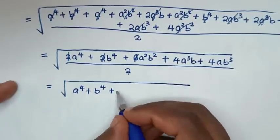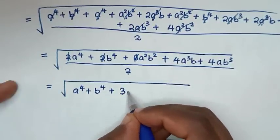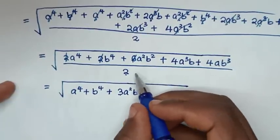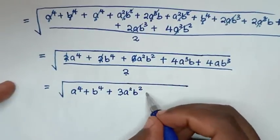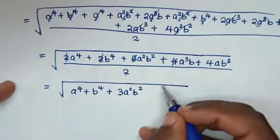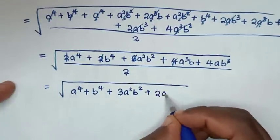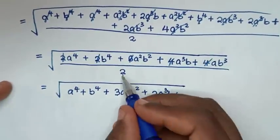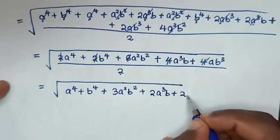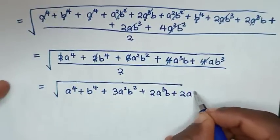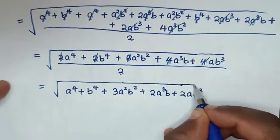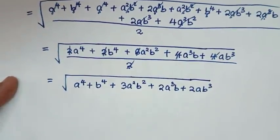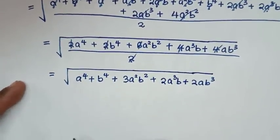Dividing by 2: it will be a power 4 plus b power 4 plus 3a squared b squared plus 2a power 3 b plus 2ab power 3.